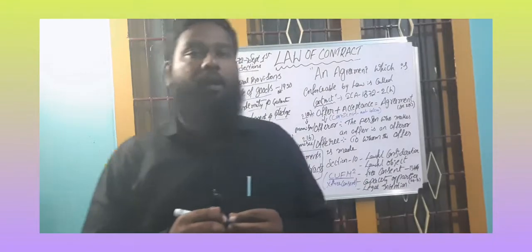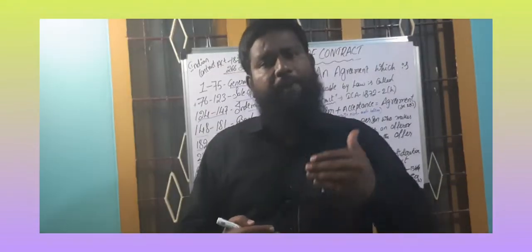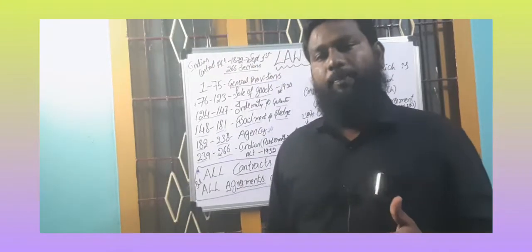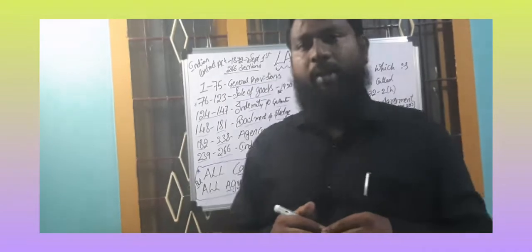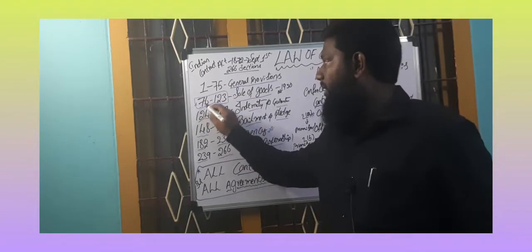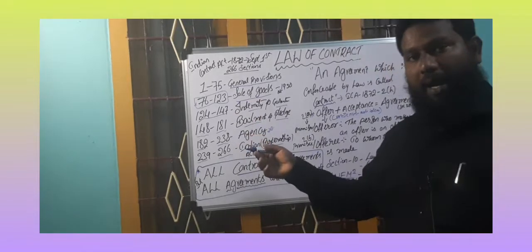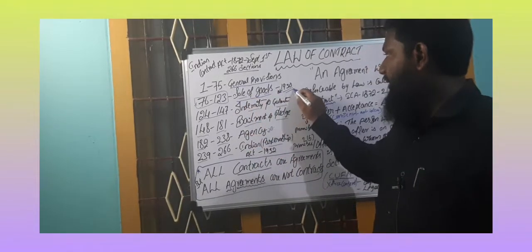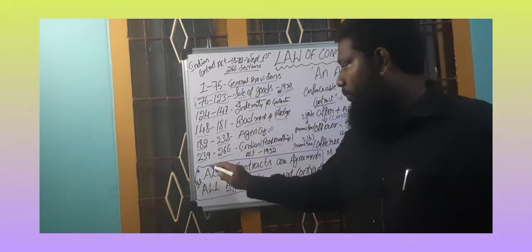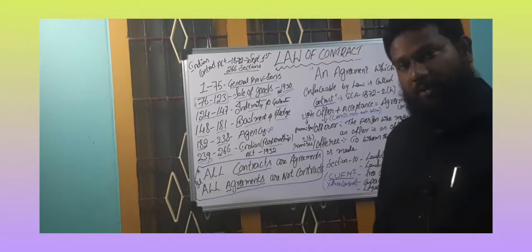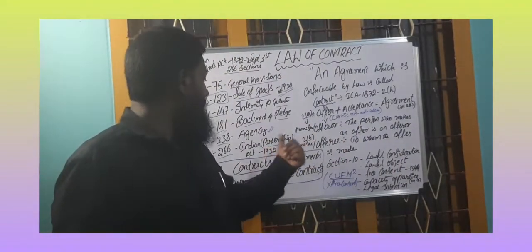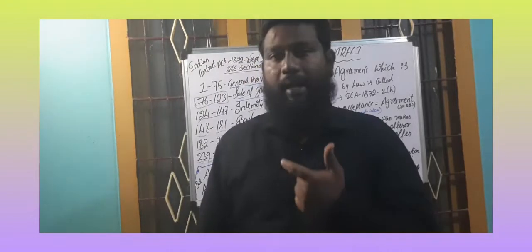After rapid development in industrial and commercial aspects, the British government, with support from the Indian government, in 1930 removed sections 76 to 123 from the Indian Contract Act and formed a new act — the Sale of Goods Act 1930. Similarly, they removed sections 239 to 266 and formed the Indian Partnership Act 1932.